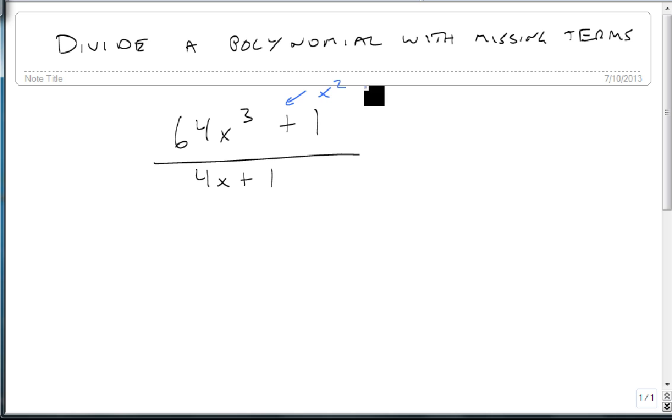For instance, there's no x squared or x in this problem. If there's none of something, that means there's zero of it. And so we need to use these as placeholders when we perform our long division. So we'll put in our 64x cubed, and then we'll put in a 0x squared for our x squared spot, and a 0x for our x spot, and then we'll add the 1.